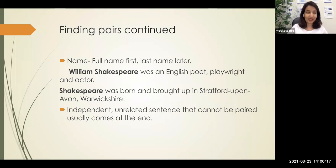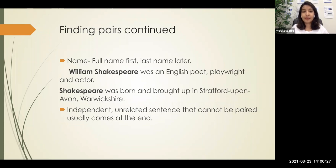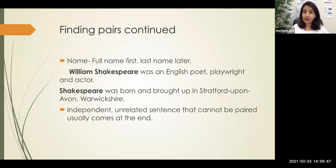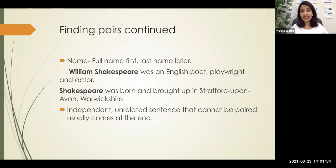Another clue that works almost 100% of the time: full name versus short name or surname. For example: 'William Shakespeare was an English poet, playwright and actor' uses the full name. Another sentence with just 'Shakespeare was born in Stratford-upon-Avon' uses only the surname. We always introduce a person using their full name first, then refer to them by surname later. So the sentence with 'William Shakespeare' will come in initial positions, and the sentence with just 'Shakespeare' will come later.